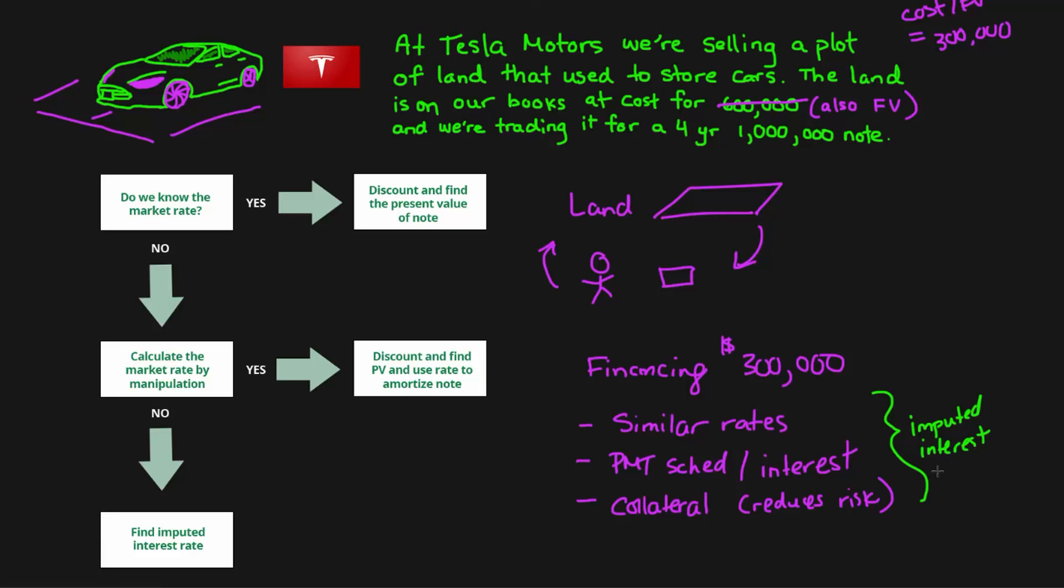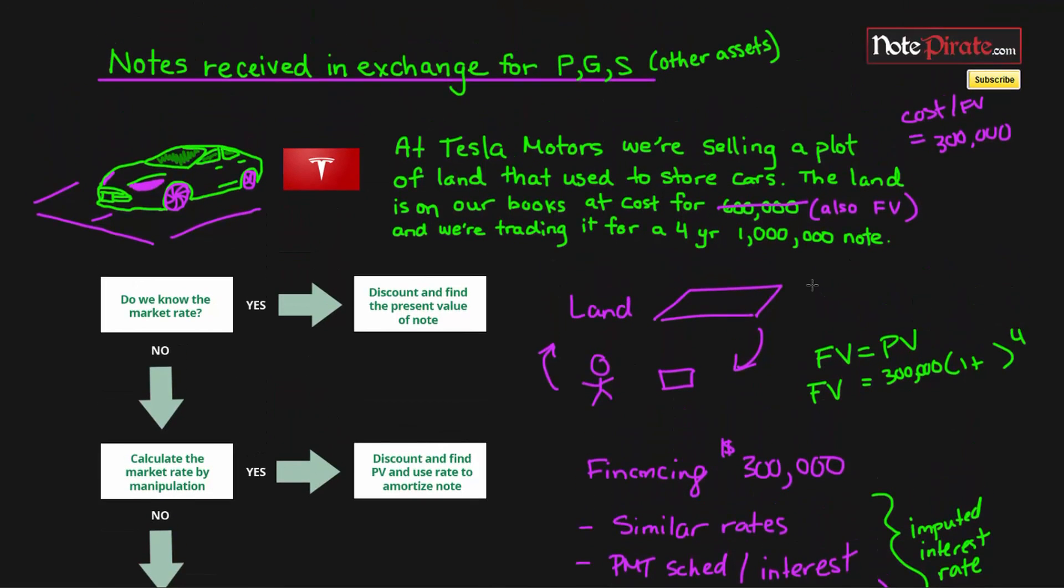The imputed interest rate is going to be used to find our future value. Because we're lending out $300,000, and depending on the rates, the future value equals the present value, which is $300,000, times 1 plus the imputed rate to the power of 4. So once we decide that imputed interest rate, it's going to yield us a certain future value. Hopefully that wasn't too confusing. Let's look at impairment of note receivables. I'm going to save that for the next tutorial because I've been talking for way too long. See you guys in the next one.